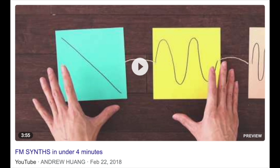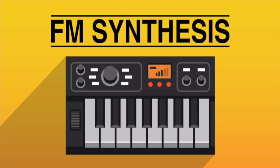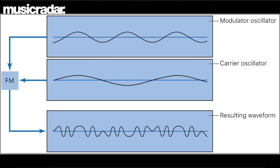My explanation is going to be pretty brief. FM stands for frequency modulation, which is a form of synthesis in which the frequency of an oscillator is modulated by another frequency. Here's a less beautiful but to-the-point illustration I found on Google.